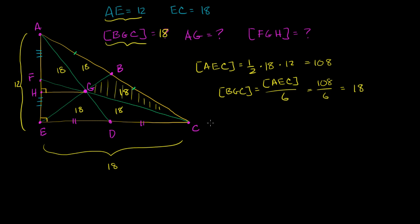Now they ask: what is the length of AG? AG is the longer part of this median. To find it, we remind ourselves that the centroid is always two-thirds along the way of the median. So if we know the entire length of the median, we take two-thirds of that. Since F and D are midpoints, AE is 12, and ED is half of EC, which is 18, so ED equals 9.